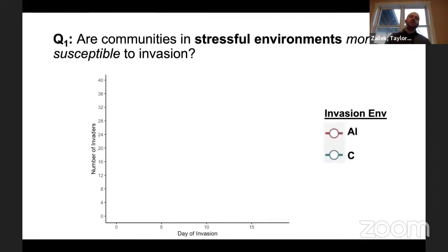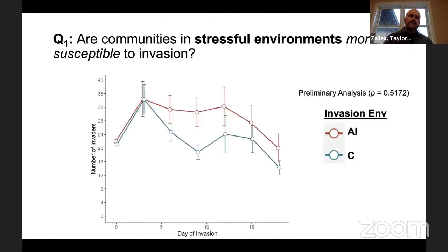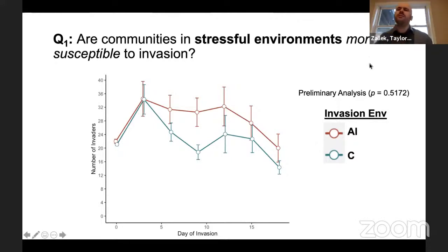First question: are those stressed communities more susceptible to invasion? The answer is no — there's a unique dynamic going on here, but statistically based on preliminary analysis we cannot say with confidence that communities in aluminum environments are actually more susceptible to invasion. Second: are populations evolving in stressful environments more successful at invading all communities? We see a marginal significant difference between populations that evolved in aluminum conditions versus those that evolved in control conditions in terms of their invasion success over that 18-day time period. That's pretty cool and really interesting.